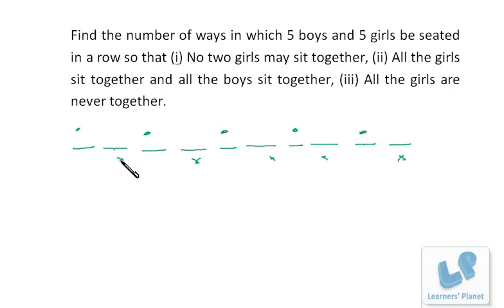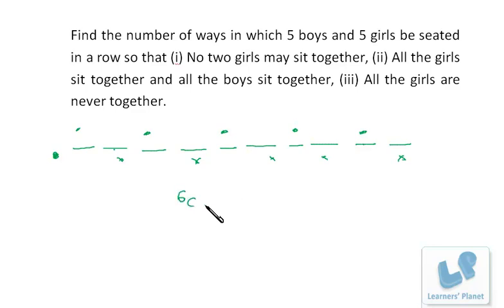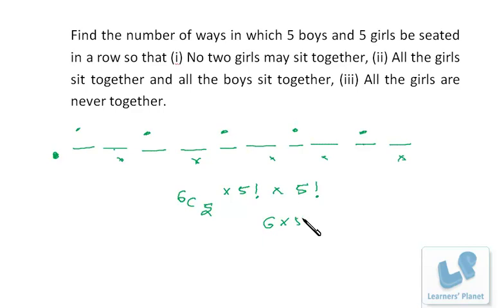No two girls may sit together, so the girls have to sit on alternate positions. If we start from this position, we are having six places for the girls. We need to choose five seats from six — that is 6C5 — and five girls can be arranged in 5! ways. The remaining five positions are for boys, so they can sit in 5! ways. So it's 6C5 × 5! × 5!, and since 6C5 = 6, that gives us 6 × 5! × 5!, which equals 6! × 5!.